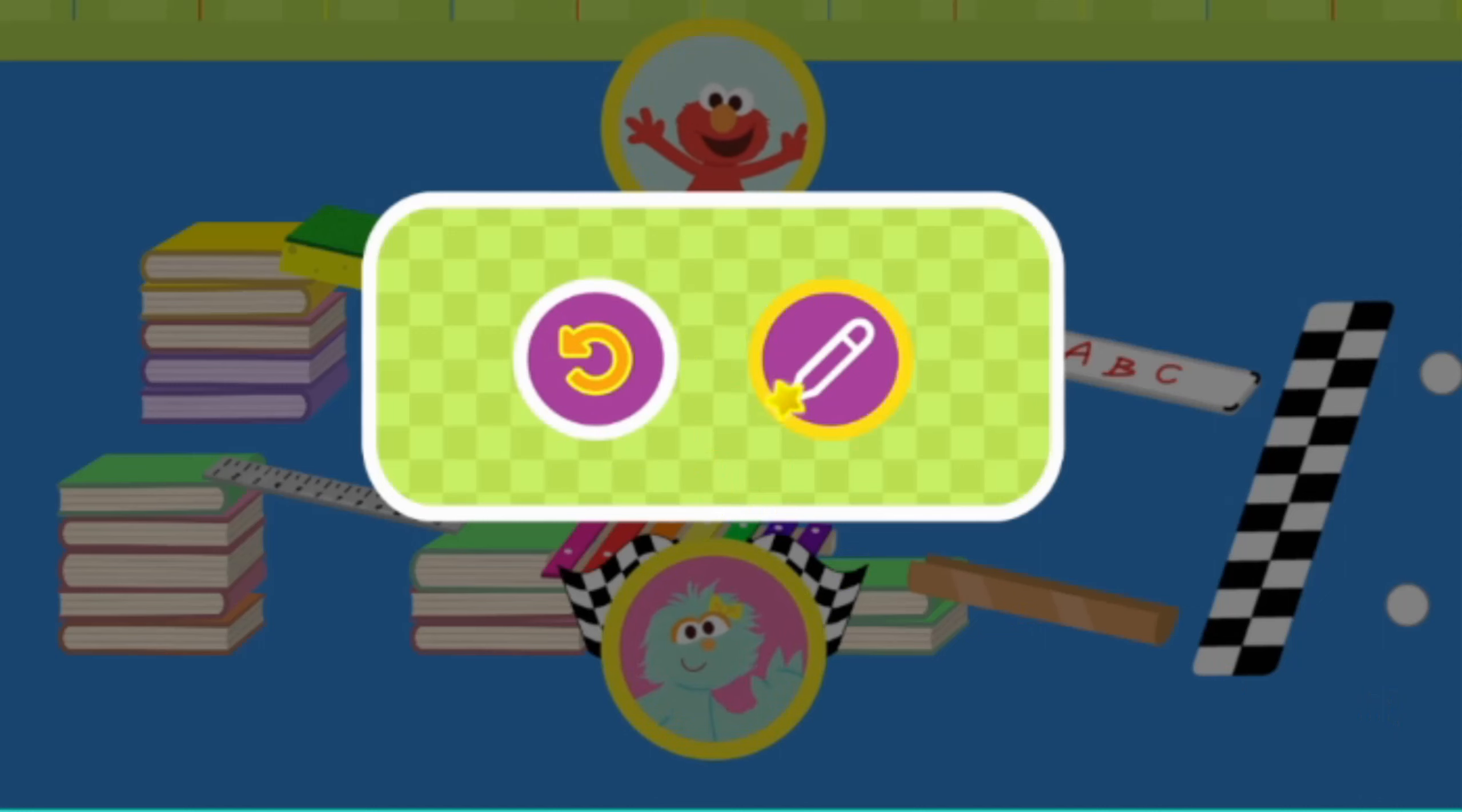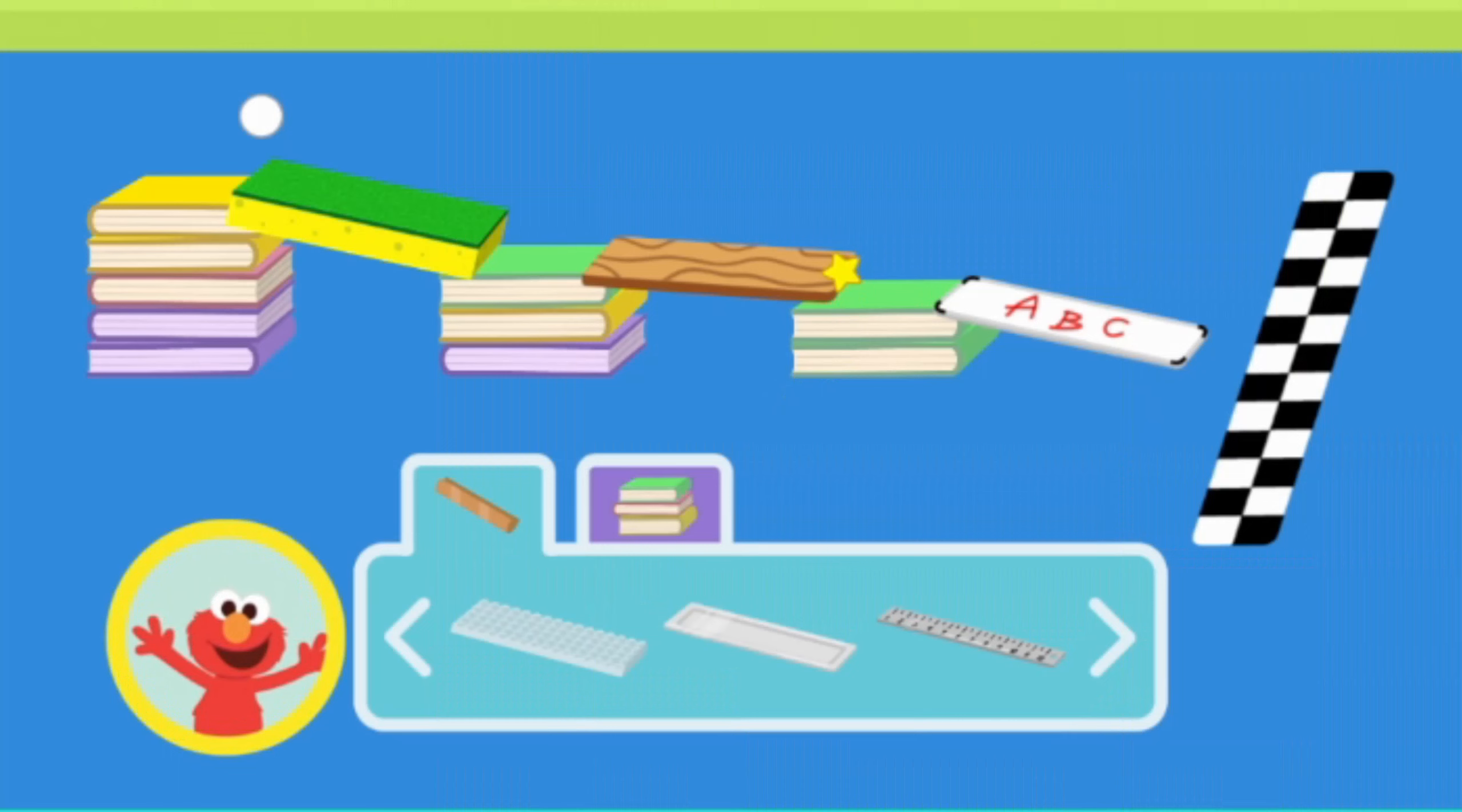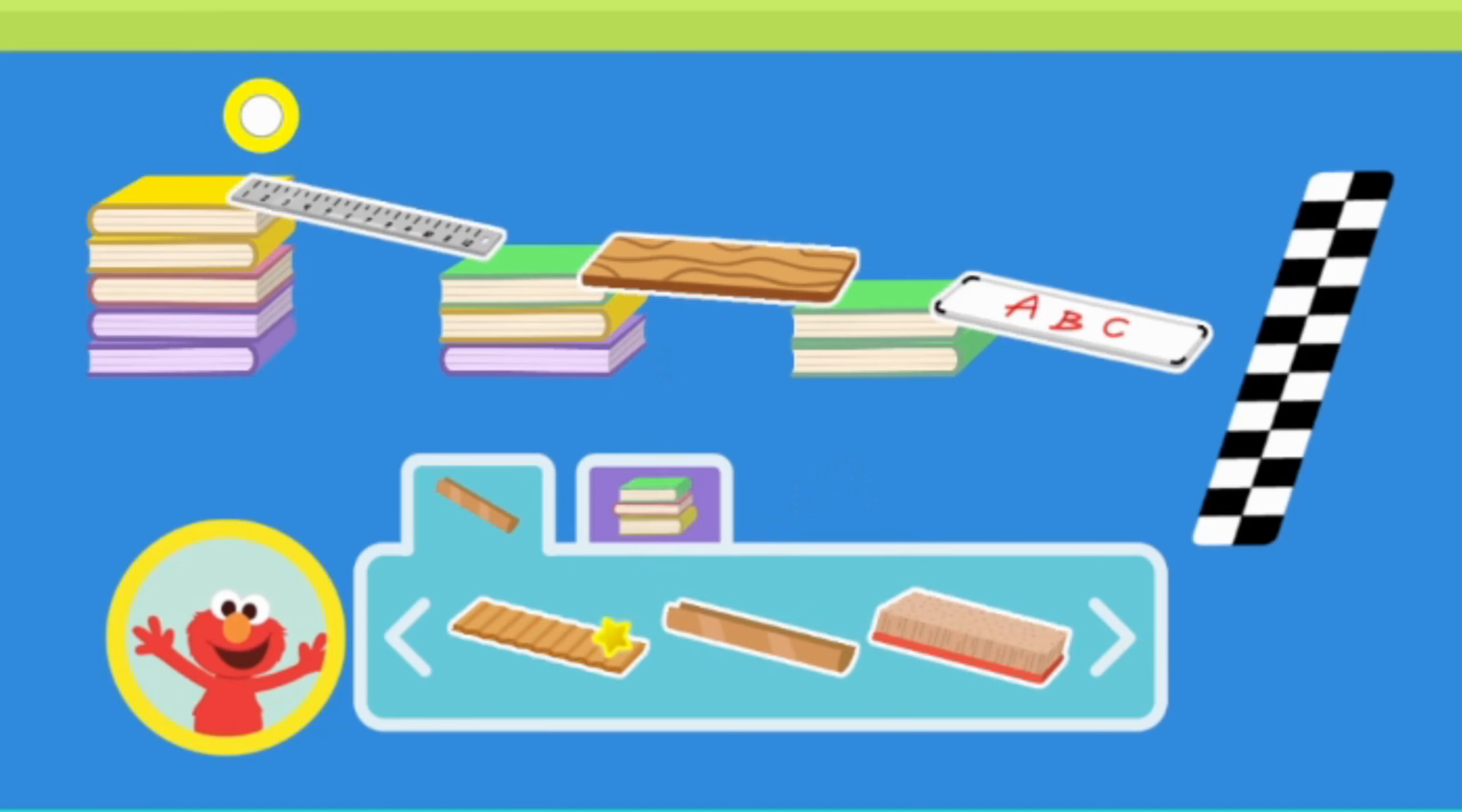Let's change our ramps and try again! Elmo wonders how to make Elmo's ramp faster. Elmo wonders if smooth pieces will help the ball go faster. Let's change the items in the ramp. What if we change out a bumpy piece for something smoother? Let's try!